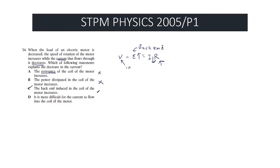Statement D — it is more difficult for current to flow into the coil — does not directly explain why the current decreases. This is more like a consequence of the increase in back EMF, not an explanation. So it does not explain the physics. The answer is C.